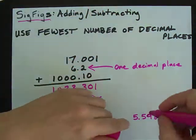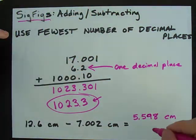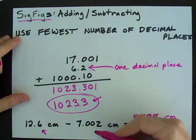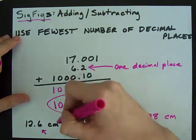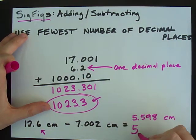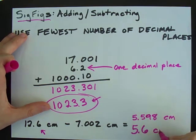But your final answer isn't 5.598. Your final answer only gets 1 decimal place. I don't care if this one had 3, your final answer only gets 1. So your final answer is actually 5.6 centimeters.